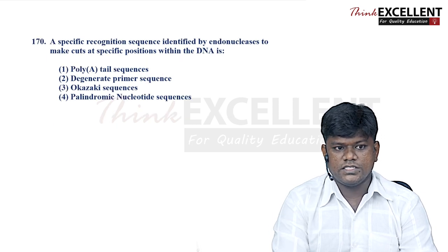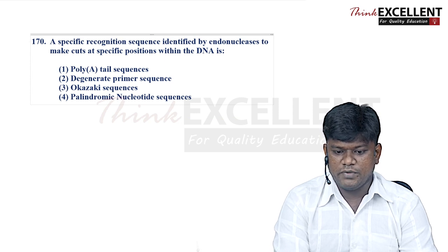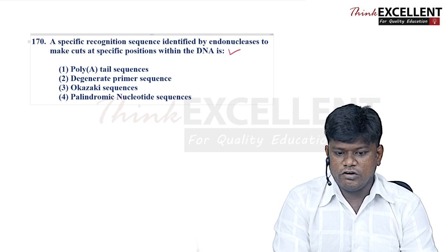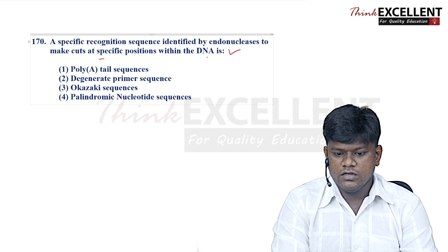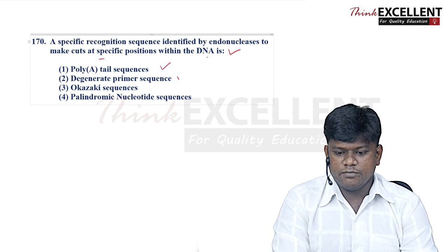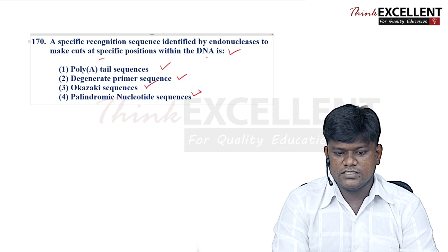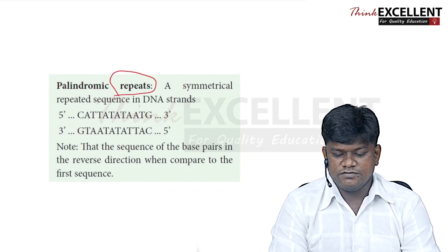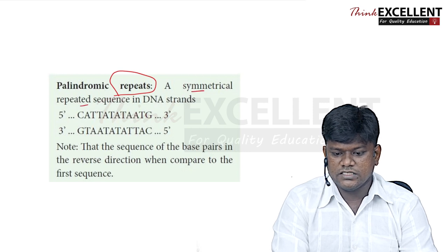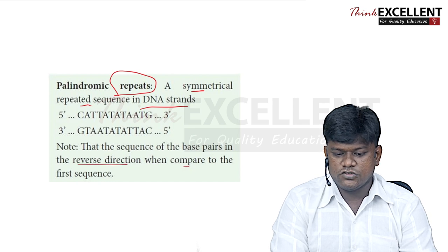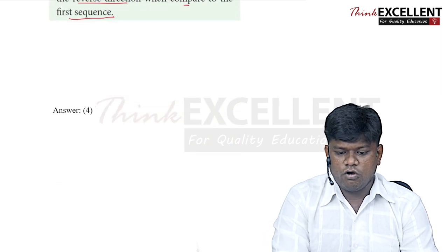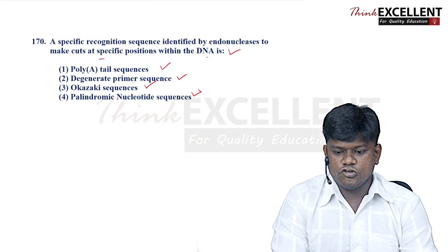Question 170: a specific recognition sequence identified by endonucleases to cut at specific positions within DNA is — poly ATL sequence, degenerate primers sequence, Okazaki sequence, or palindromic nucleotide sequence. Palindromic sequences are symmetrical repeated sequences in DNA strands where base pairs run in reverse direction compared to the partner strand. Restriction endonucleases recognize these palindromic sequences. Option 4 — palindromic nucleotide sequences — is the right answer.